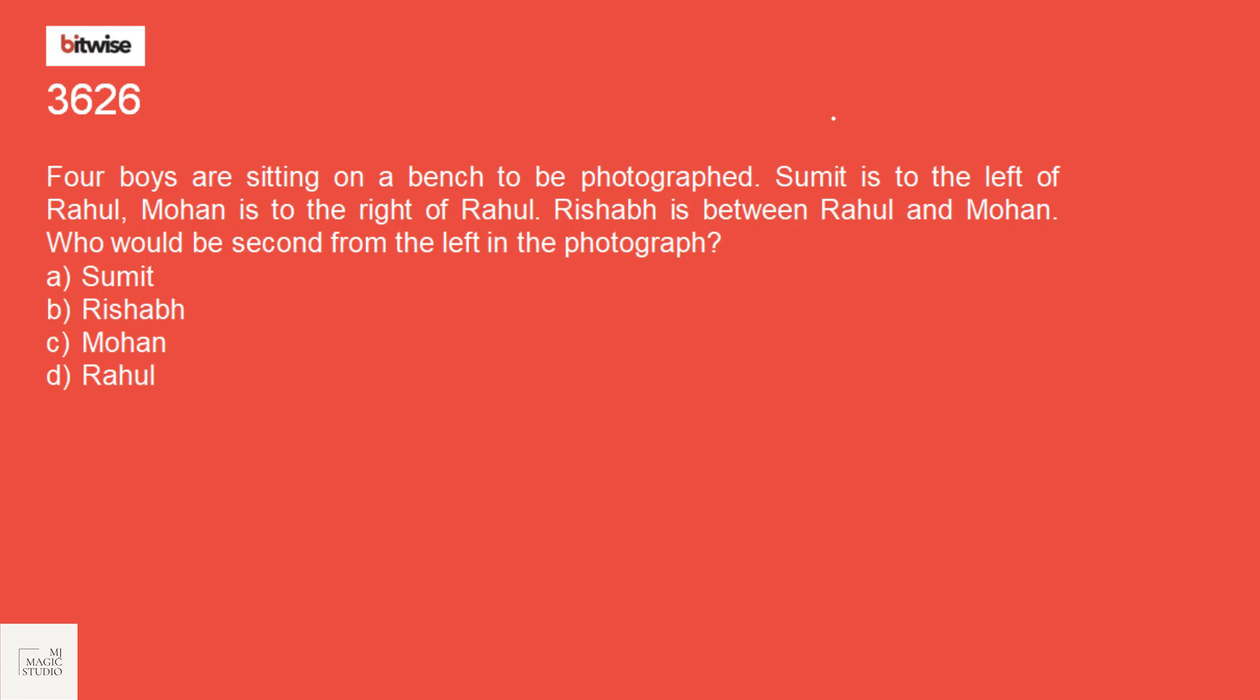Moving on to one of the last question of this session. Sample questions for Bitwise Global. And it is from verbal sitting arrangement again. Four boys are sitting on a bench to be photographed. Sumit is to the left of Rahul. Let they are facing the photographer there. Sumit is to the left of Rahul. Mohan is to the right of Rahul. Rishav is between Rahul and Mohan. Between Rahul and Mohan is Rishav. So this is the arrangement. Who would be second from the left? Second from the left is Rahul. Option D is the pick.